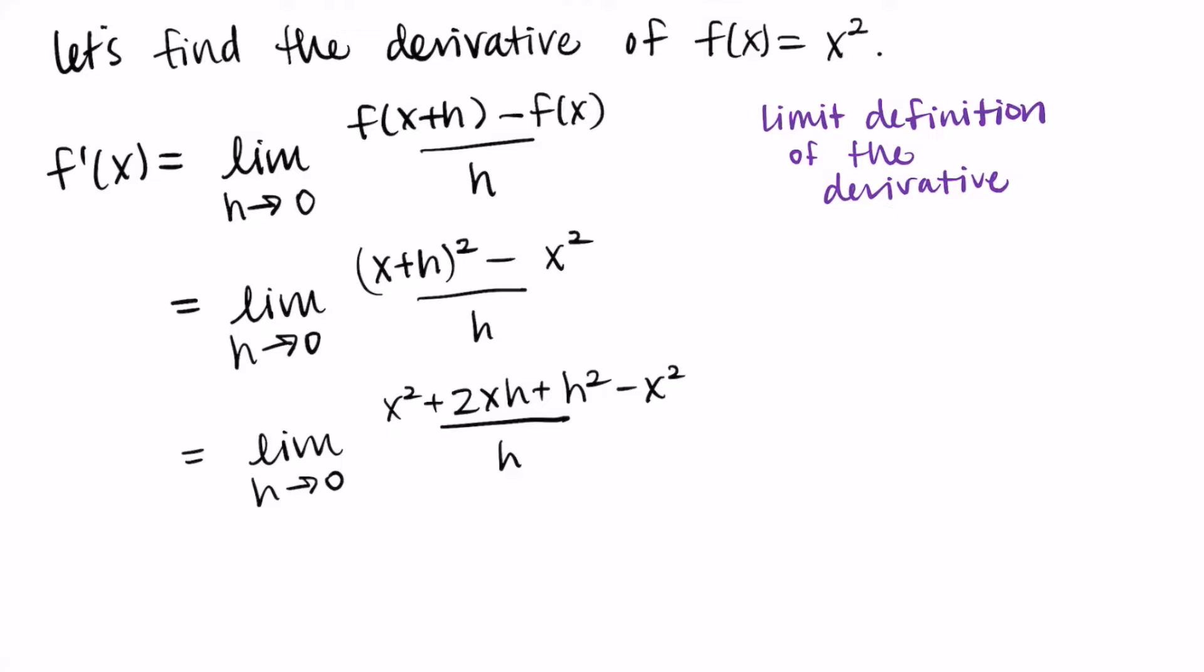Now we're hoping to combine some of the terms together to get something that will simplify. I see that we have an x squared and a minus x squared so those will cancel each other out, and I am left with 2xh plus h squared all over h.